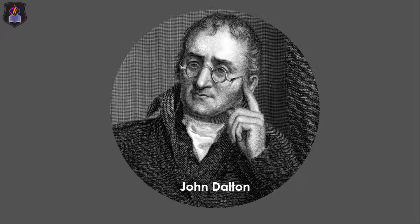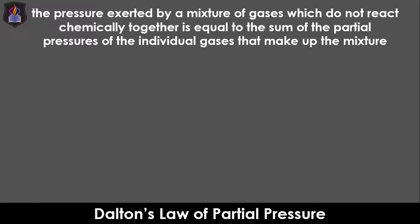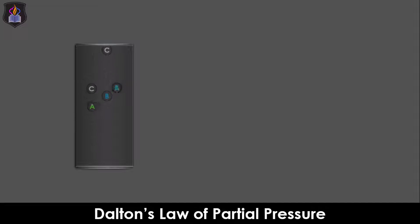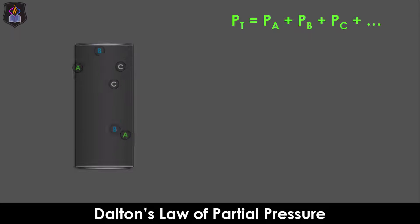According to John Dalton, the pressure exerted by a mixture of gases which do not react chemically together is equal to the sum of the partial pressures of the individual gases that make up the mixture. In other words, if we have a mixture of gases A, B, C in a cylinder, then the total pressure Pt exerted by the mixture is the sum of the individual pressures of the gases if each gas were to occupy the volume occupied by the mixture, and is given as Pt = Pa + Pb + Pc.